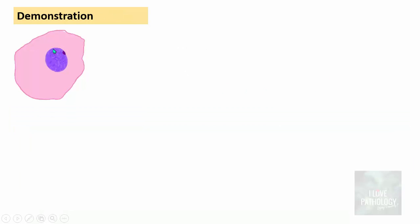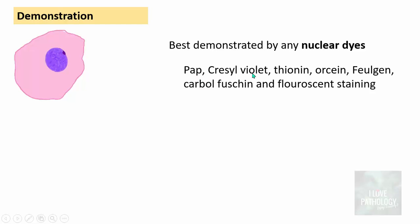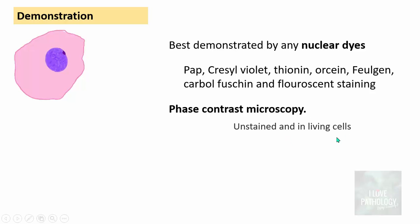Bar Bodies are best demonstrated by nuclear dyes. These include Papanicolaou stain, cresyl violet, thionine, orcein, Feulgen stain, carbol fuchsin, and even fluorescent staining. Phase contrast microscopy is also used to study these Bar Bodies, and importantly, with phase contrast microscopy you can see Bar Bodies even in unstained and living cells.